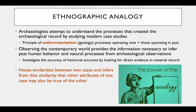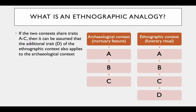Such an analogy notes the similarities between two cases and infers from that similarity that other attributes of one case might also be true of the other. If an analogy withstands rigorous testing, then it eventually becomes middle range or middle level theory. For example, if we are attempting to interpret a mortuary feature from an archaeological context, and we identify a funerary ritual from an ethnographic context that shares several traits — traits A through C — with the material remains recovered in the mortuary feature, we can assume that any additional traits of the ethnographic context, such as D, also apply to the archaeological context.